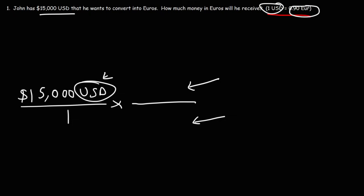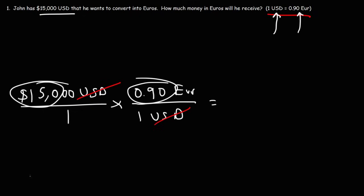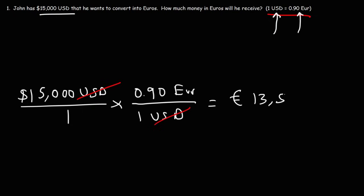Notice that we have US dollars on the top in the first fraction. In order for that unit to cancel, we need to put that same unit on the bottom of the second fraction. So we're going to put that part on the second fraction, which means 0.9 euros goes on top. You want to set it so that the units cancel — if you do that, you'll get the right answer. Because both numbers are on top, we multiply: 15,000 times 0.9 gives us 13,500 euros.